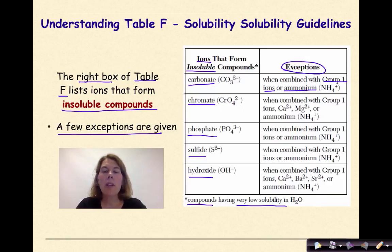Chromate, CrO4-2. Again, these will be soluble when we combine them with the group 1 ions, calcium, magnesium ions, or ammonium. Phosphate, typically insoluble unless that phosphate ion is combined with group 1 ions because any compound with a group 1 ion in it is going to be soluble or ammonium. Sulfides, typically insoluble unless, again, we're seeing a trend here, a pattern of group 1 ions or ammonium.